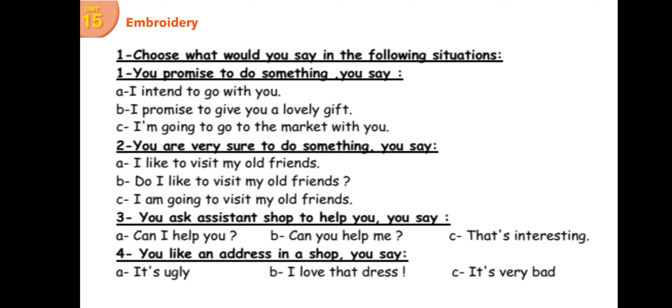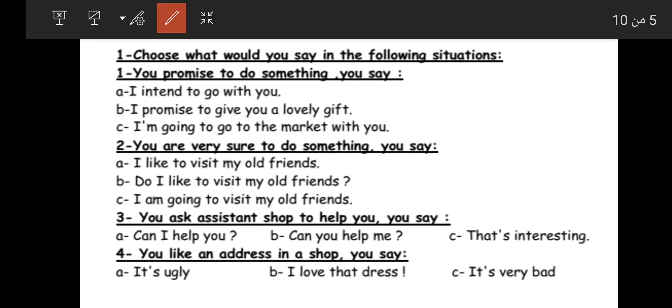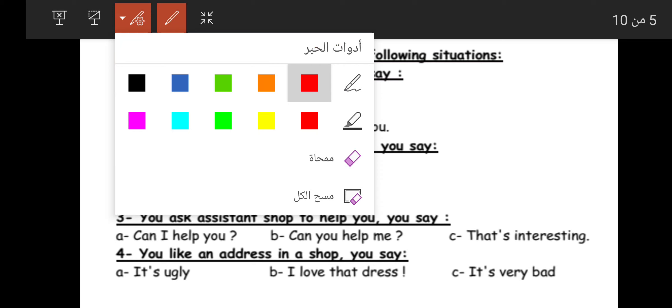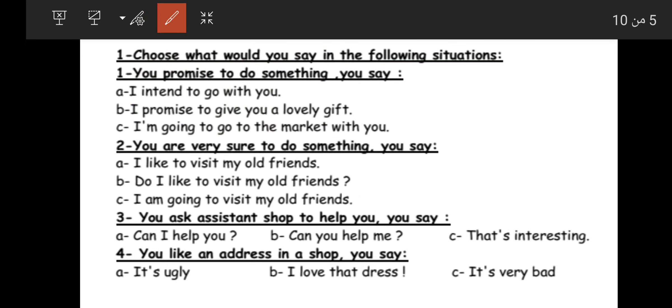Now let's look at the exercise: 'Choose what you would say in the following situations' — اختر ماذا ستقول في المواقف التالية. Situation one: you promised to do something. Remember: 'I promised to' must be followed by the verb in the base form — I promised to + verb.